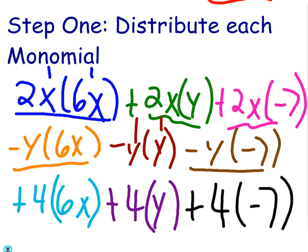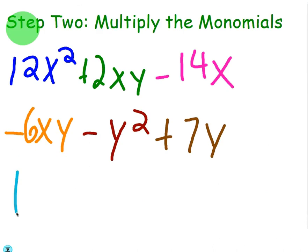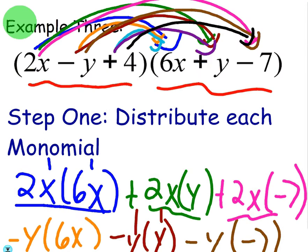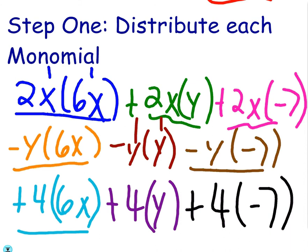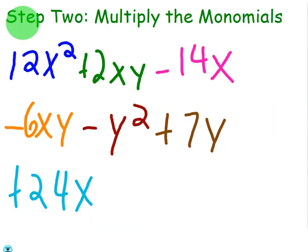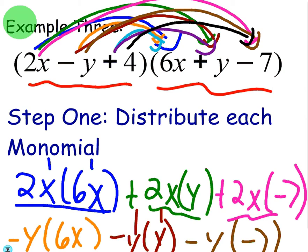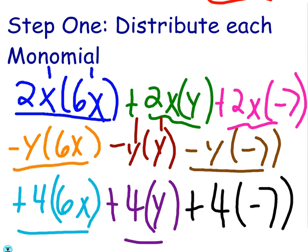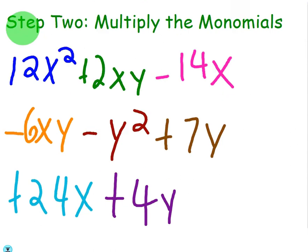Then we got positive 4 times 6x, positive 24x. Then we got plus 4y, which is just plus 4y. Same as what it is. Then we got plus 4 times minus 7, negative 28.